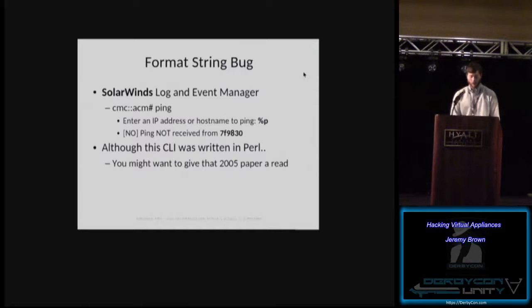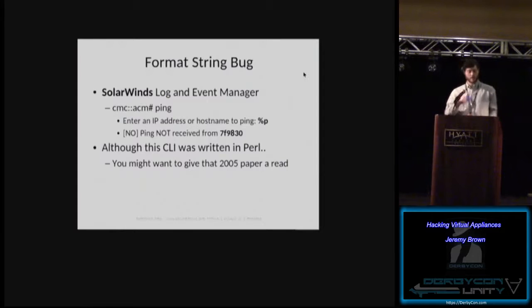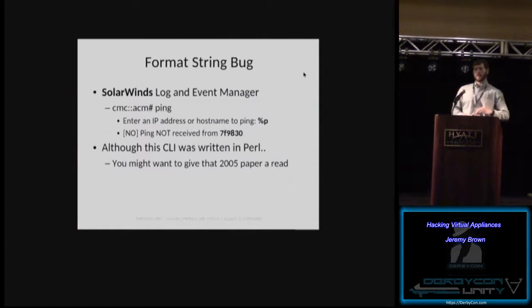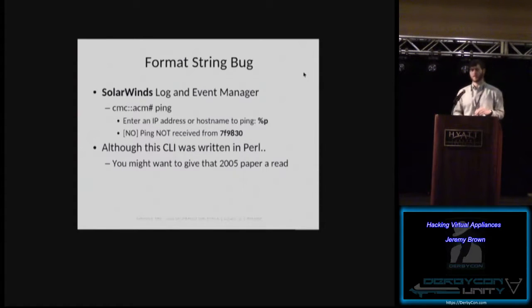For you old timers — format string bugs are still around a little bit. In the SolarWinds Log and Event Manager, in the ping command, if you give it a %p, it will give you a memory address. You might think that's not exploitable — it's probably hard. But there is a 2005 paper about exploiting format string issues in Perl, and maybe Python too. That was in the Log and Event Manager.